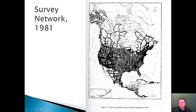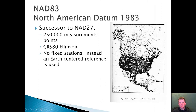In 1981 you can see there are quite a bit more dense survey locations. Then in 1983, a couple years later, it's 250,000 points using the Earth-centered ellipsoid — even more dense than before.